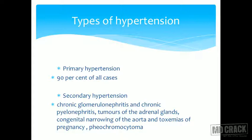All the more reason to screen people for secondary hypertension. Examples of secondary hypertension include chronic glomerulonephritis, chronic pyelonephritis, congenital narrowing of the aorta, pheochromocytoma, and adrenal gland tumors. This is not an exhaustive list.